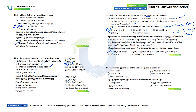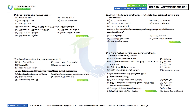Twenty-third question: The working principle of the optical square is based on double reflection. Twenty-fourth question: Double sighting is a method used for prolonging a line. Option B is the correct answer.